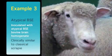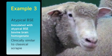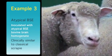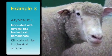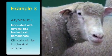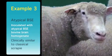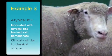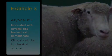Example 3 is a clinically affected sheep intracerebrally inoculated with atypical BSE bovine brain homogenate, examined at 50 months post-inoculation, which presents clinically similar to classical scrapie. For this reason, a classical scrapie case is not included.